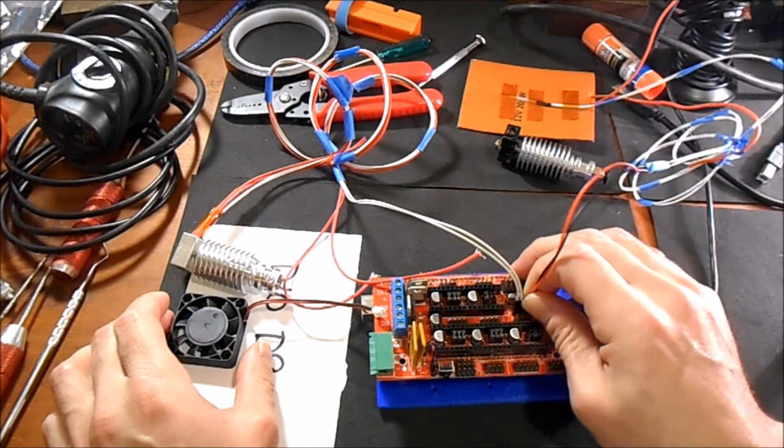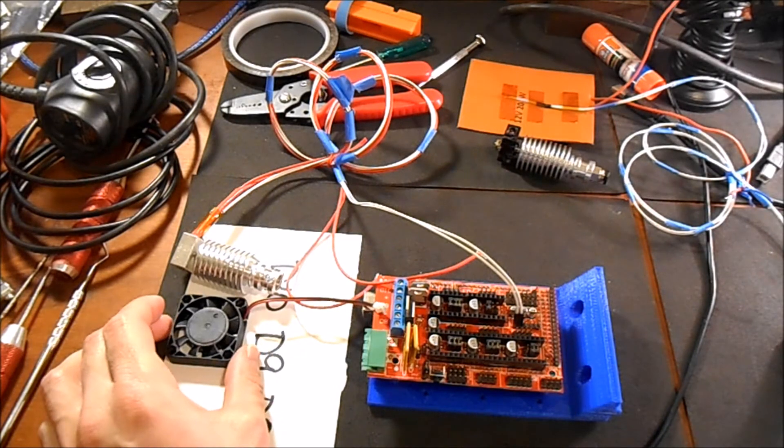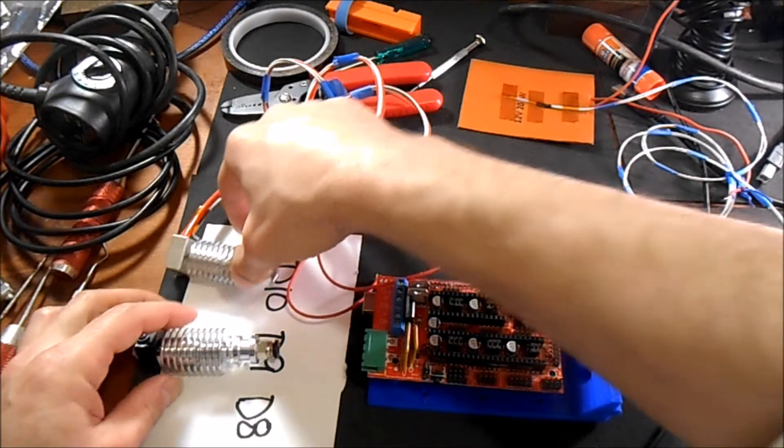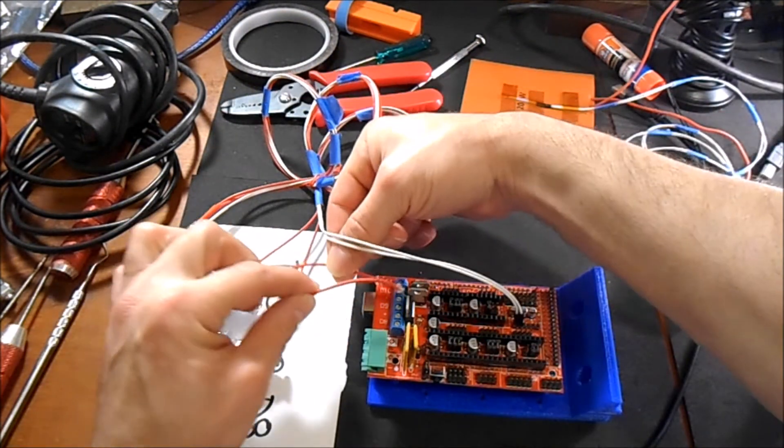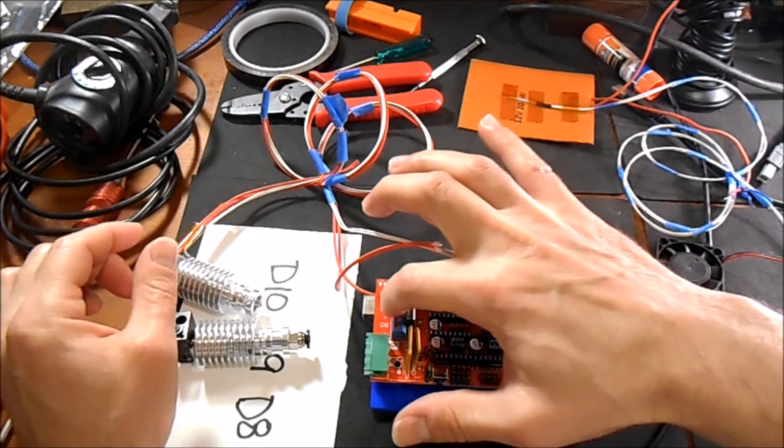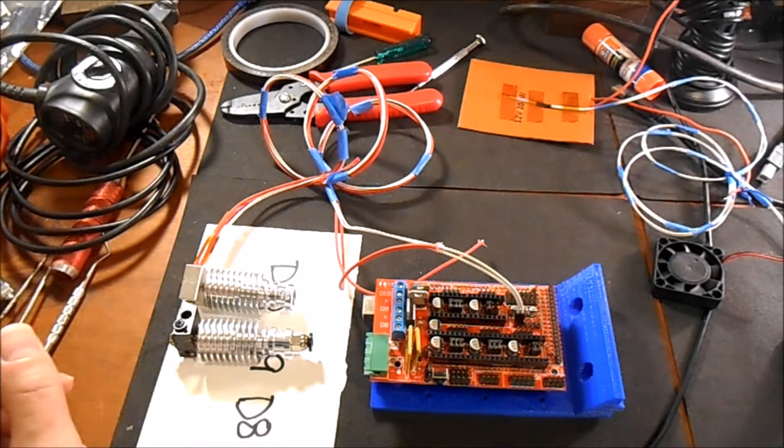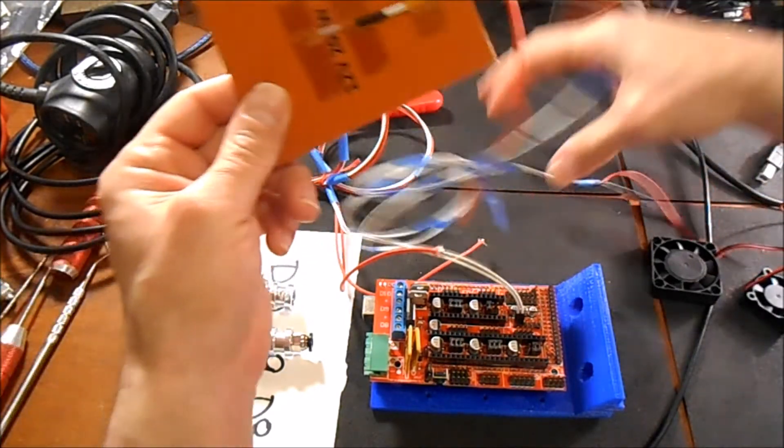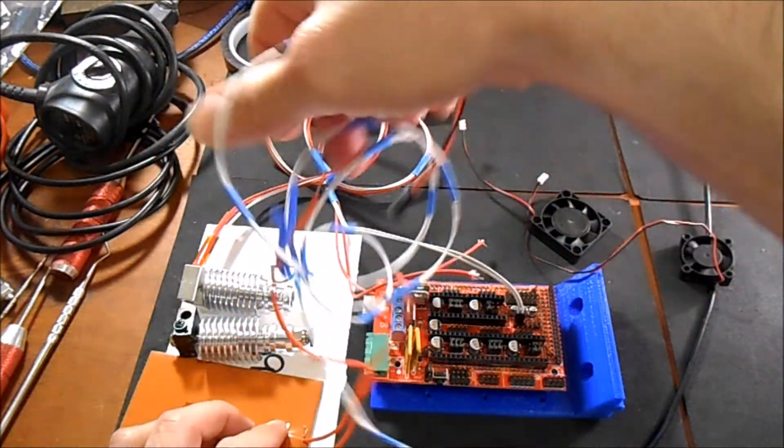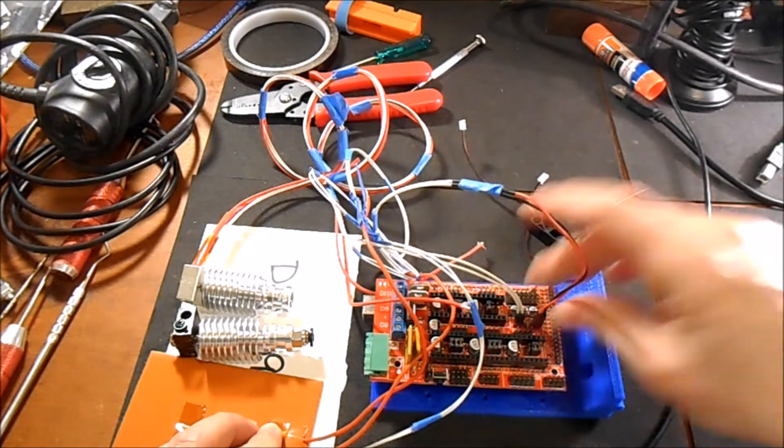The next configuration that we're going to have is going to be hotend, hotend, and bed. So D10 we're going to do as we did before. D9 we're going to do the same thing, but we're going to do it on D9, and we're going to use T1 for the thermistor connection. And then we're going to use the bed. The bed is going to connect to D8, and the thermistor is going to connect to T2.